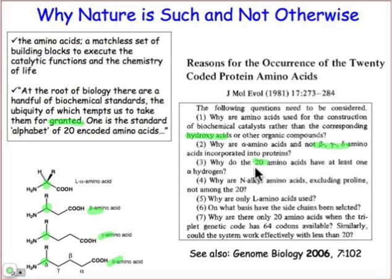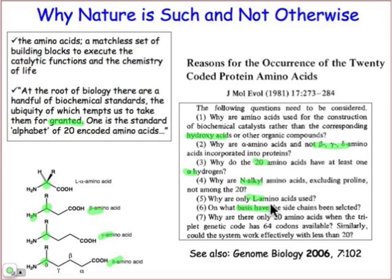Why only 20 amino acids? And why do they all have at least one α-hydrogen? Does the α-hydrogen play a role in the chemistry? How come the nitrogen group, except in the case of proline, wasn't alkylated — wasn't going to have an alkyl group attached to it? Instead it always has at least a hydrogen atom there. Why are typically the L-amino acids used? And on what basis were those side chains — which we'll learn about in the next webcast — selected? And then of course the question of how come this alphabet of 20 is enough, especially given the genetic code that we'll learn about, which can accommodate a much larger alphabet.